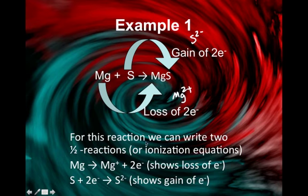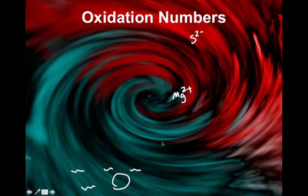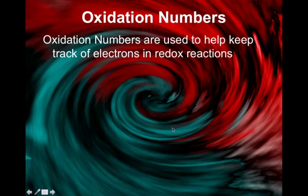We write half reactions to show the loss of electrons from magnesium and the gain of electrons for the sulfur. Gain is always written as though the electrons are one of the reactants, and then our product is an ion. For the loss, we show the element as the reactant, the ion, and the electrons as a product. You'll get used to writing these.